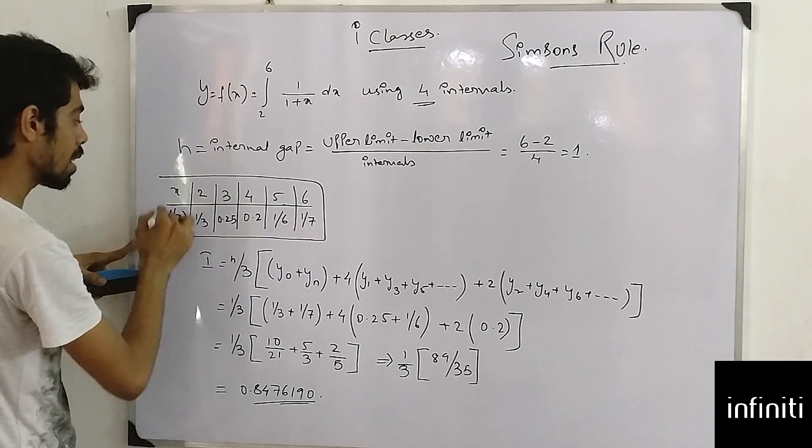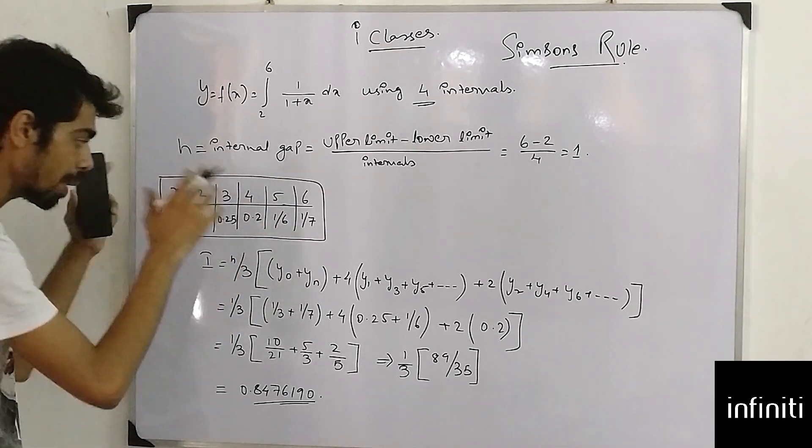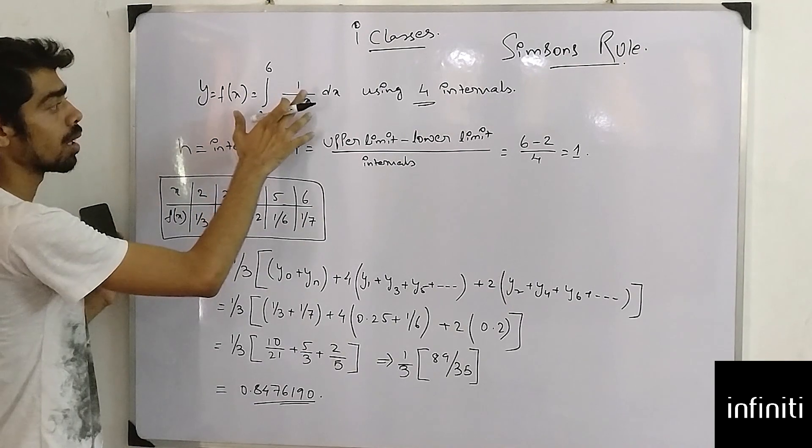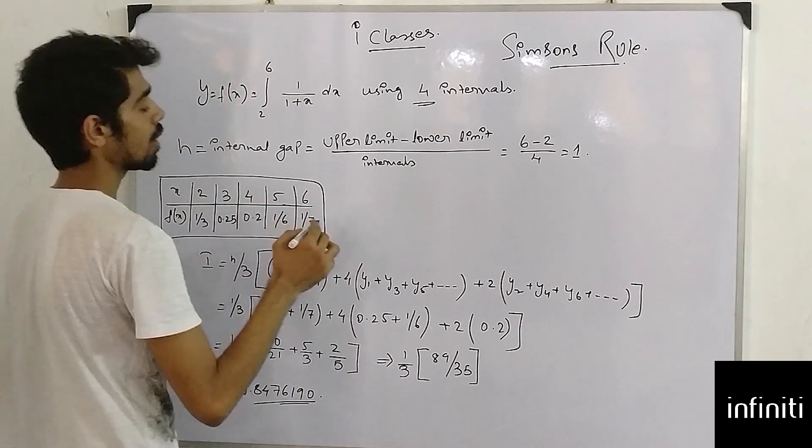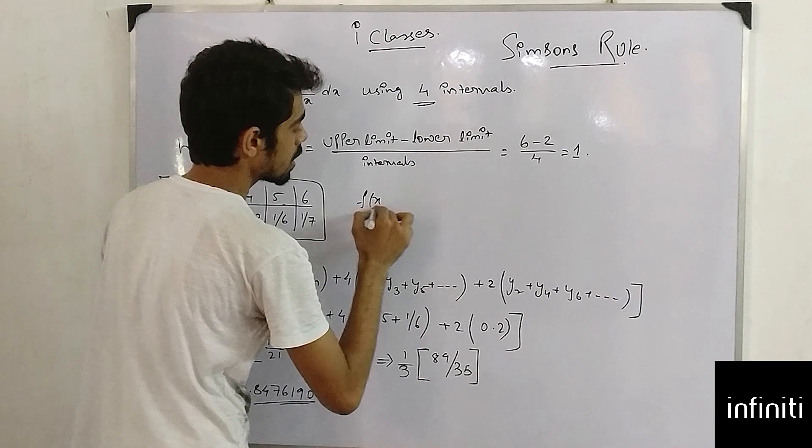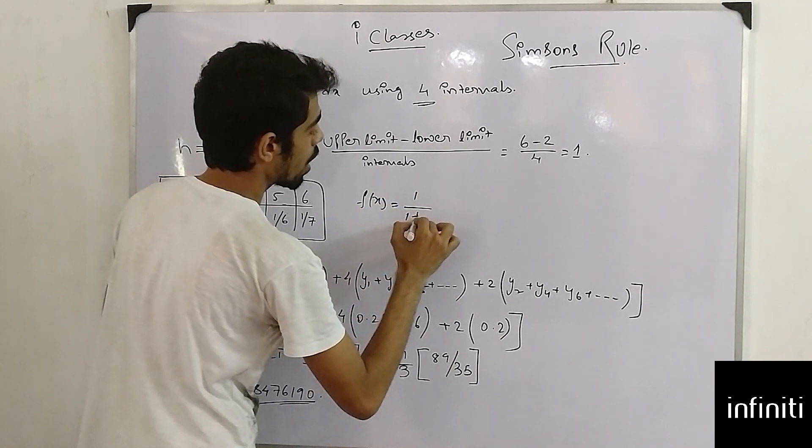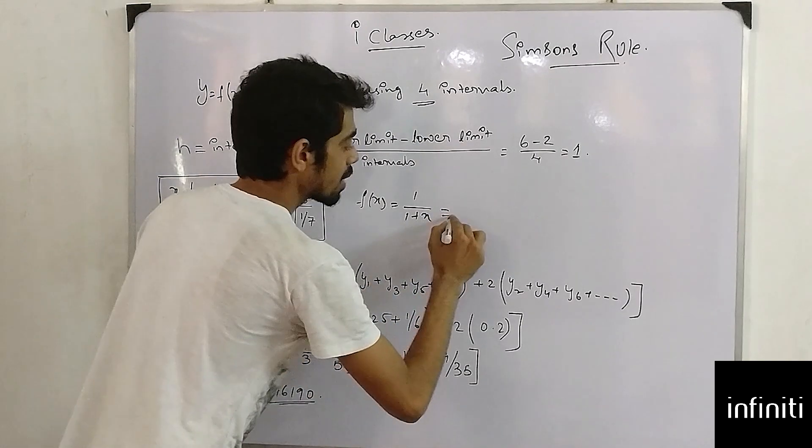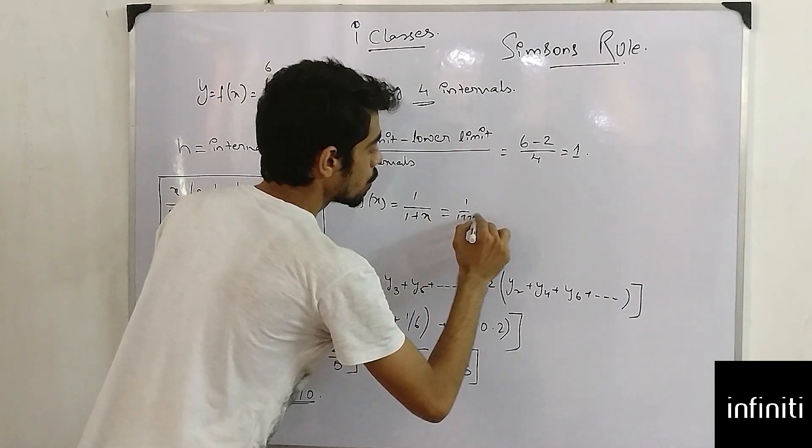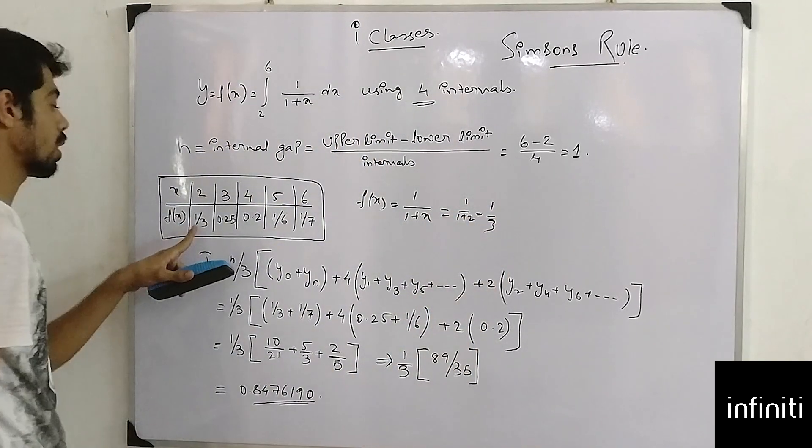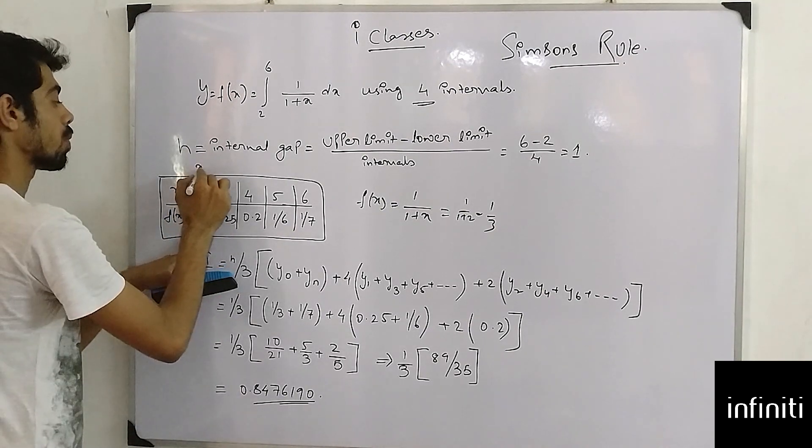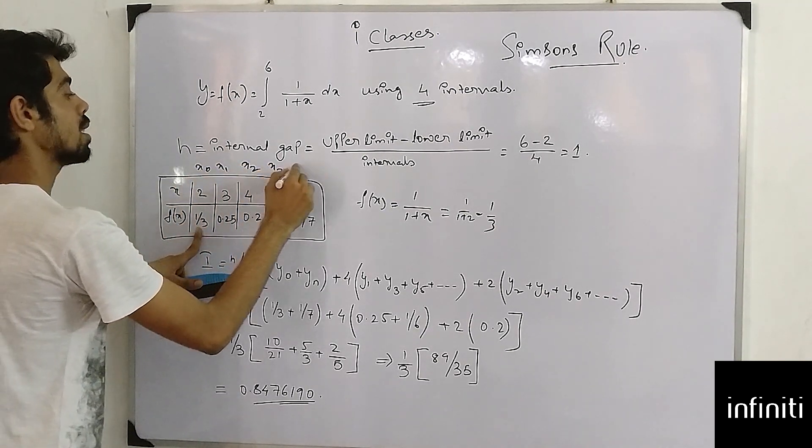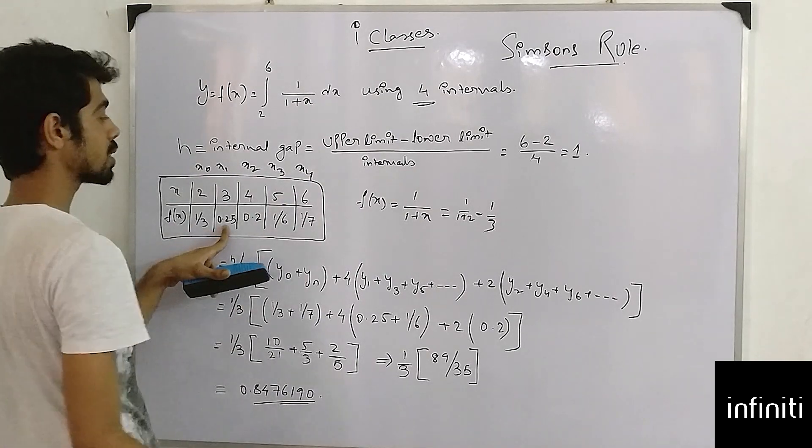Now from the previous classes, again we have to make a table. What is my value of fx? Here fx is 1 by 1 plus x. So if I put the value of x equals 2, I will get 1 plus 2, which is 1 by 3. For x0, x1, x2, x3, and x4.